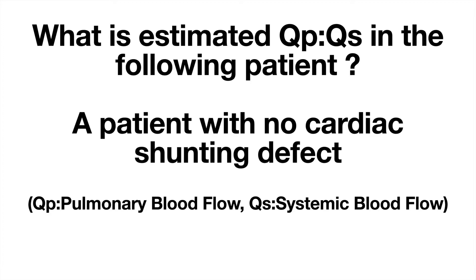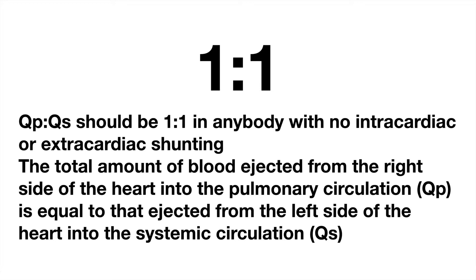What is the estimated QP/QS in a patient with no cardiac shunting defect? QP/QS should be 1 to 1 in anybody with no intracardiac or extracardiac shunting. The total amount of blood ejected from the right side of the heart into the pulmonary circulation equals that ejected from the left side into the systemic circulation.